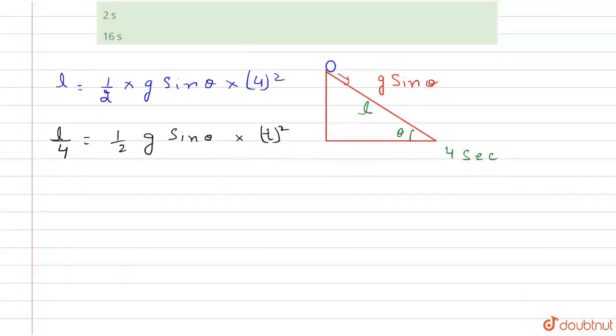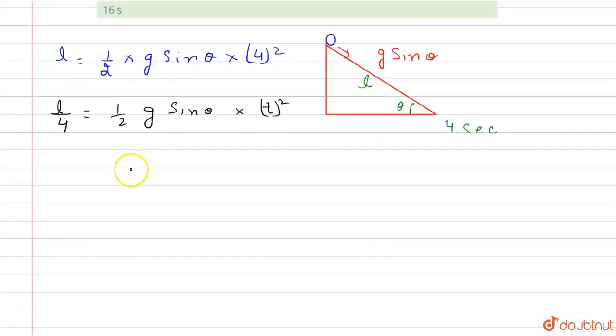If we divide these two equations, we get 4 equals 16 divided by T squared, and at the end we get T equals 2 seconds.